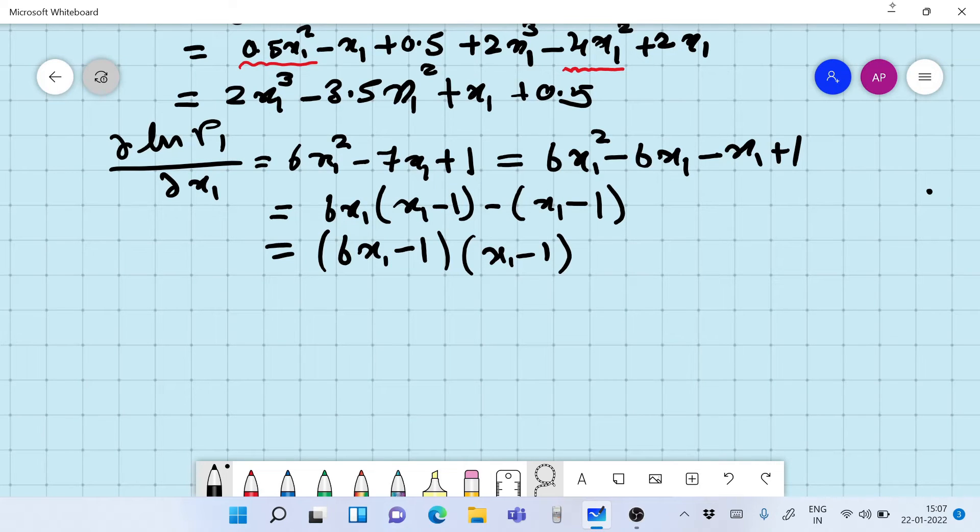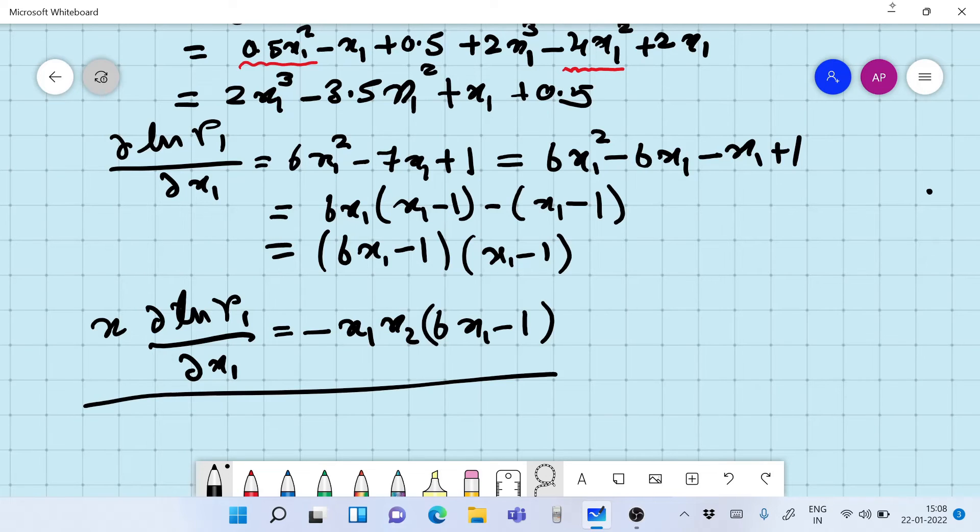We can write this as 6x1 square minus 6x1 minus x1 plus 1. We can now write this as 6x1 minus 1 times x1 minus 1, right? We have this equation now and therefore, we can write this as we have to multiply this by x1.